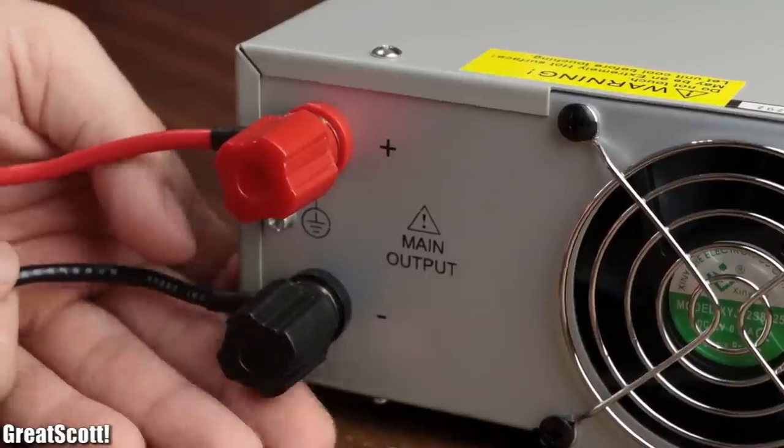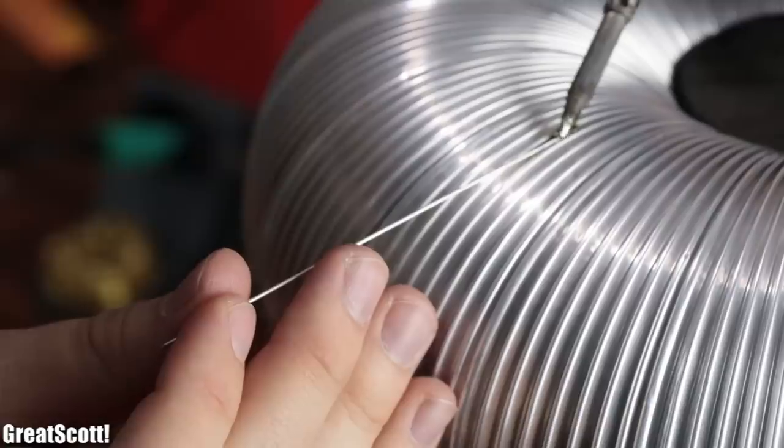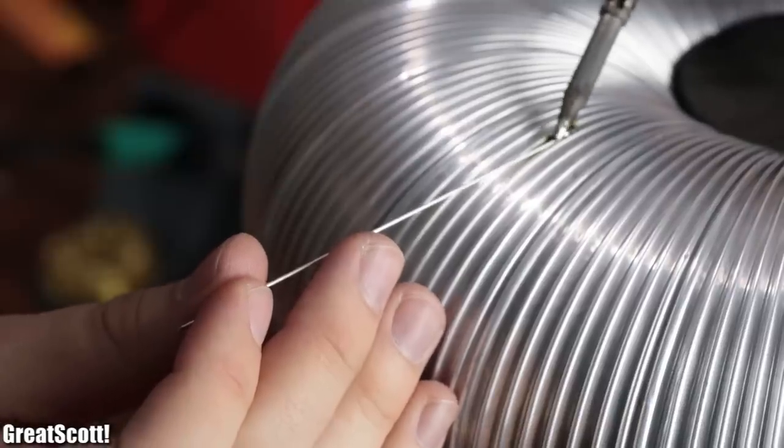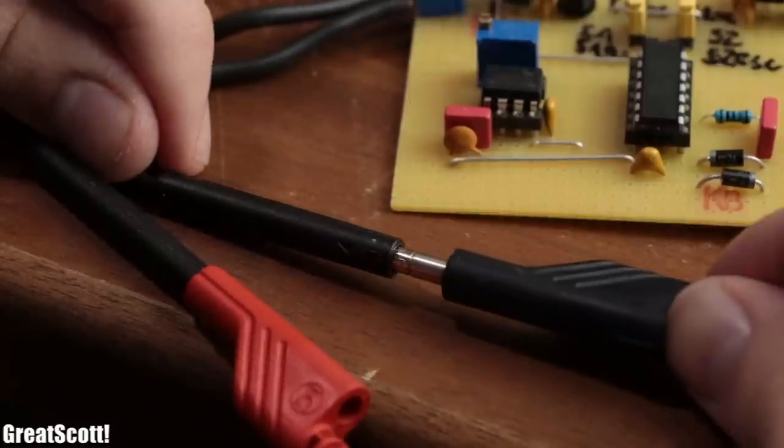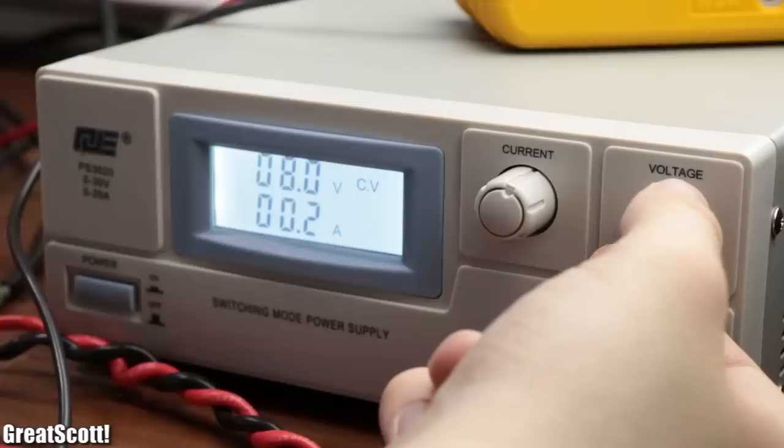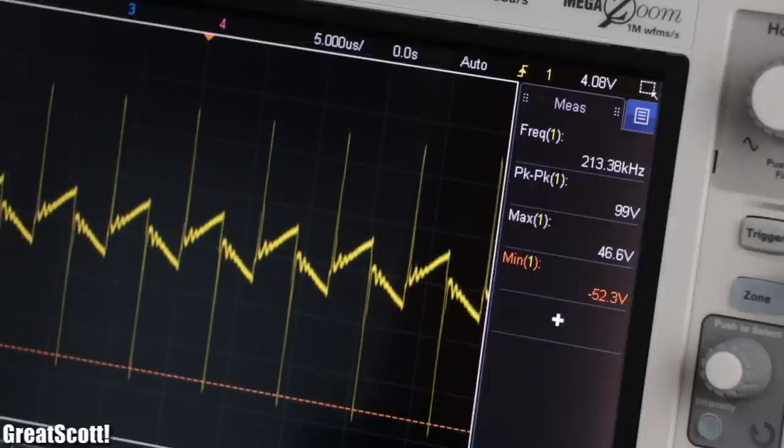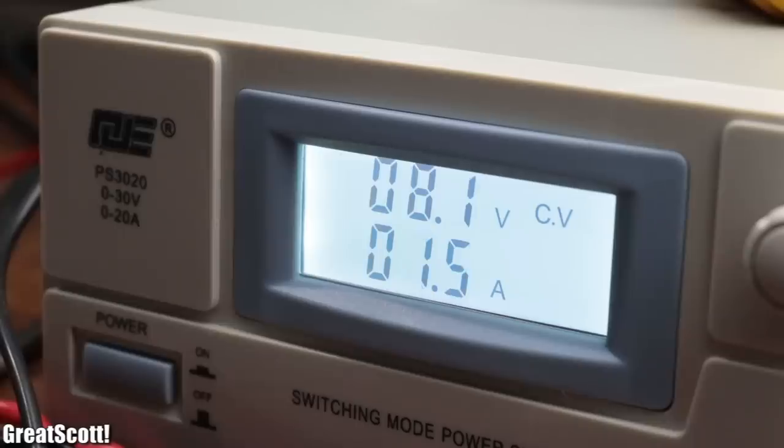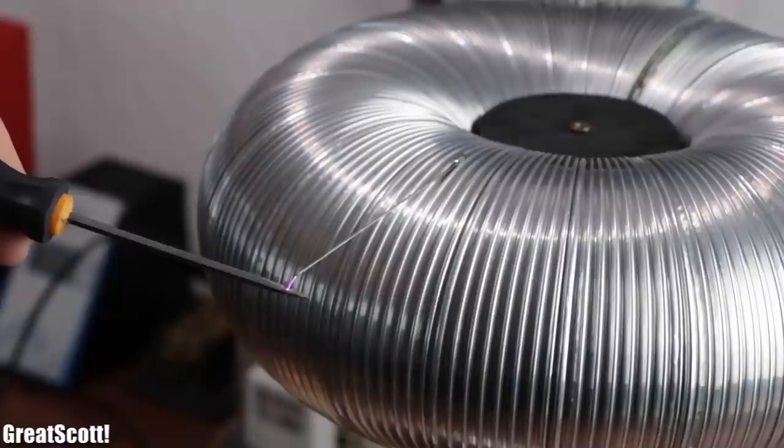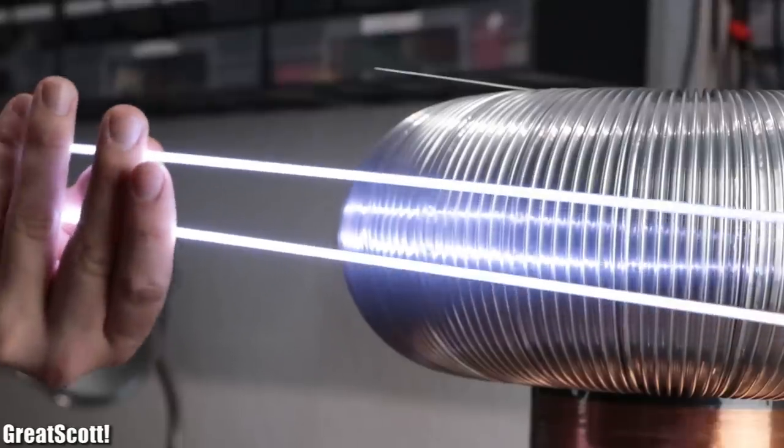After connecting its output to the input of the inverter and adding a piece of silver copper wire to the top load, it was time for a proper test. At an input voltage of 8 volts and a frequency of around 160 kilohertz, the primary drew around 4.5 amps and thus created pretty decent arcs and lighted up CFL lamps without a problem.